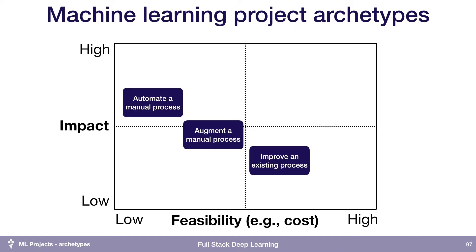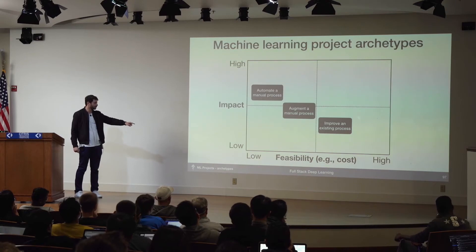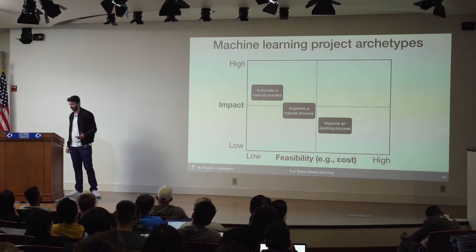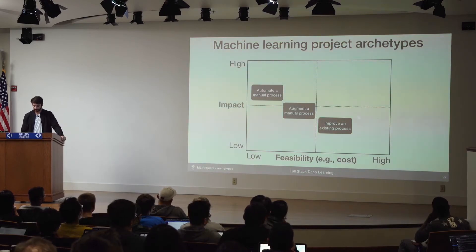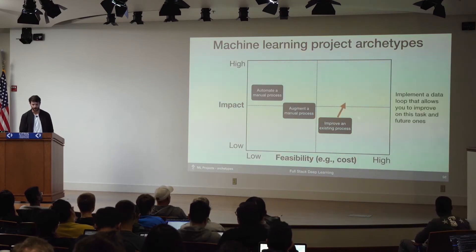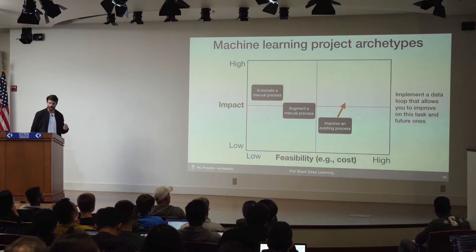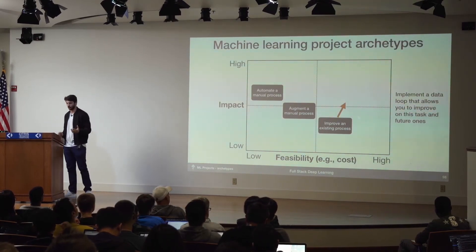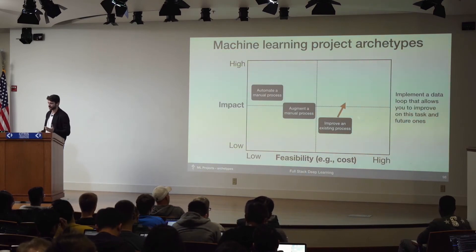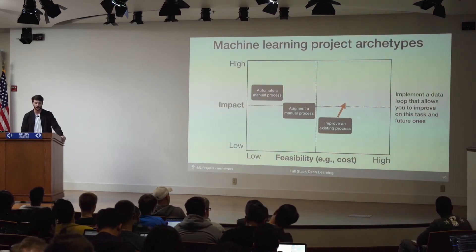Each of these project archetypes lives at a different place on the impact versus feasibility trade-off. Generally the most feasible projects are where you're improving an existing process, but often those have the lowest impact. One thing you can do to improve the impact potential is if you have a data loop that automatically allows you to continually improve your performance and collect more data to automate more tasks down the road, then these projects can become higher impact.